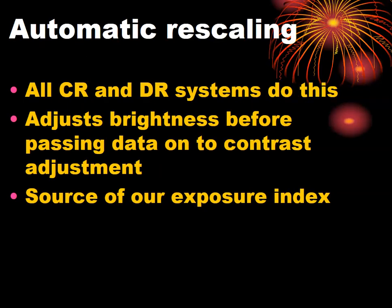All CR and DR systems perform automatic rescaling. The computer examines either the collimated region of interest or the whole panel, assesses how dark or light the image is, and adjusts it into a pleasing visual range — approximately 1.5 optical density units for humans. This preliminary adjustment either darkens or lightens the image for the user. This process is determined by the programmer's algorithm, and this is also where your exposure index value comes from.